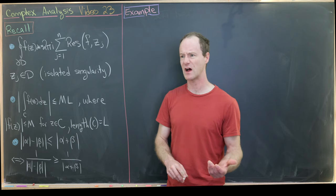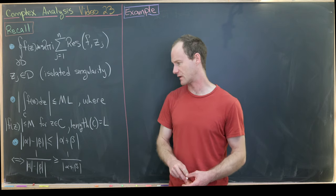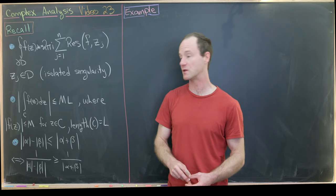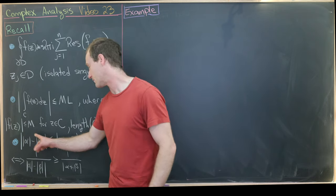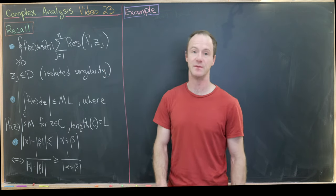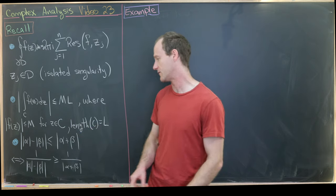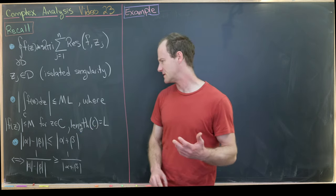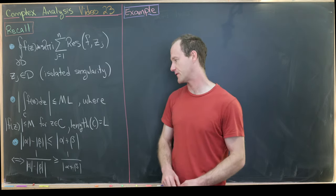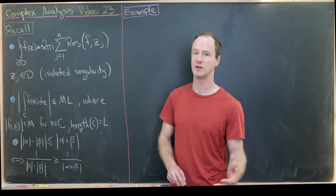The third tool follows fairly easily from the triangle inequality. It says that the modulus of (|α| - |β|) is less than or equal to the modulus of α + β. That tells us that 1 over |α| - |β| is bigger than or equal to 1 over |α + β|. This will be pretty helpful for a lot of the things we look at today.